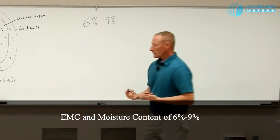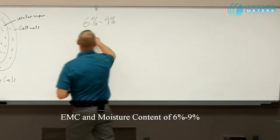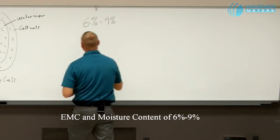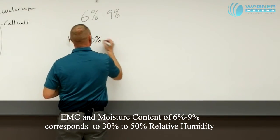As we said, relative humidity affects what our moisture content is. So if we want six to nine percent moisture content, we want a relative humidity between 30 and 50 percent.